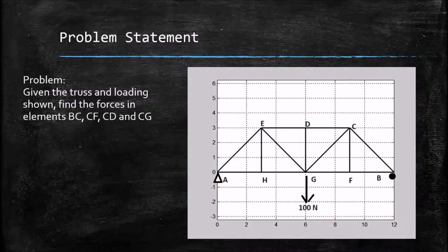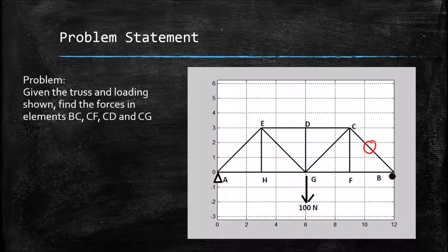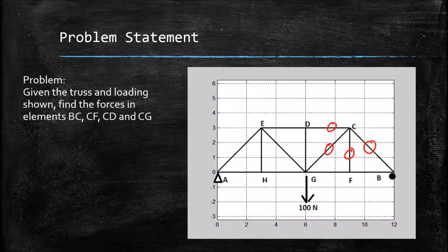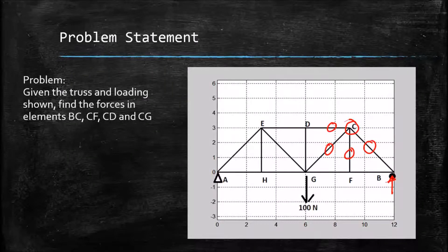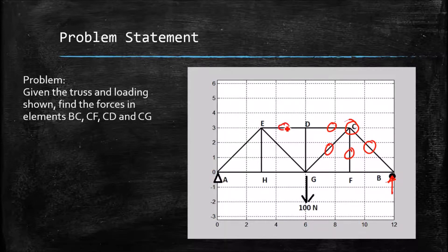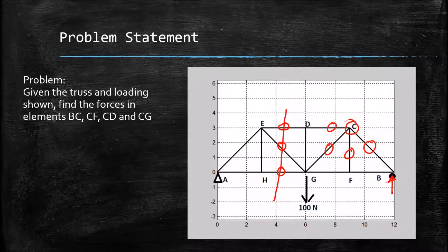Here's our problem statement. Given this truss and this hundred Newton load, we need to find the forces in elements BC, CF, CD, and CG. This is a subtle hint to use the method of joints, because all of the truss elements I want you to find forces in are clustered around one single joint, which happens to be close to where an external force is applied. The method we could have used is the method of sections — but that's another video.